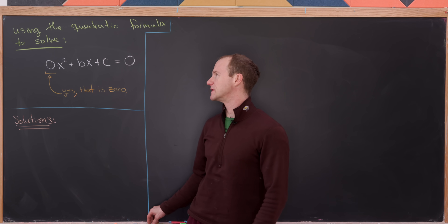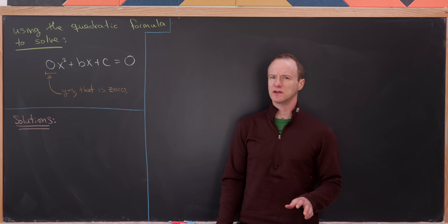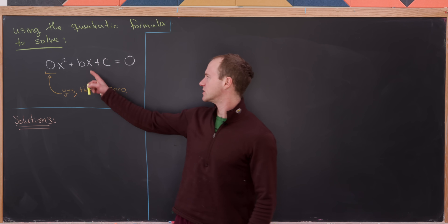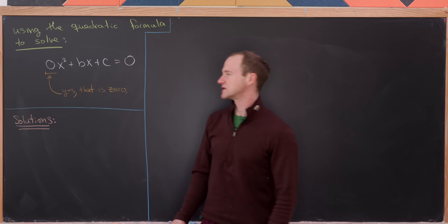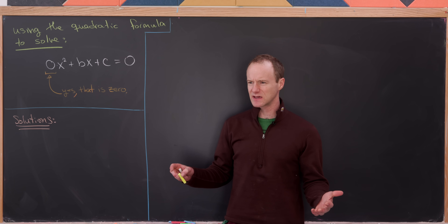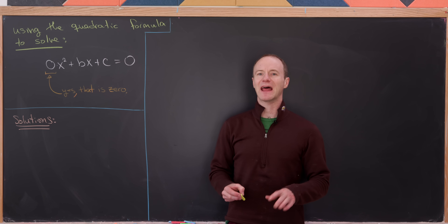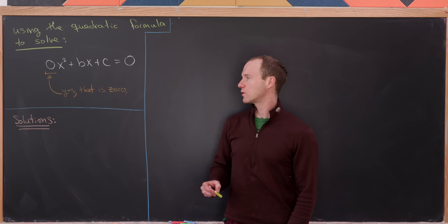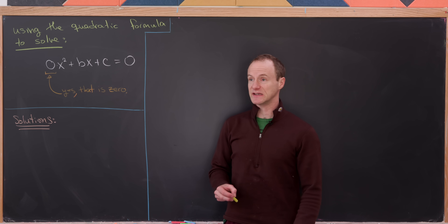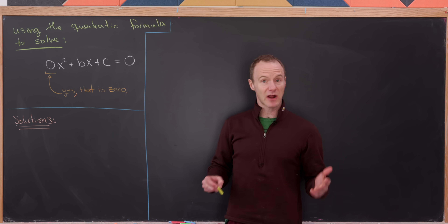Today I'd like to look at an interesting thing that happens when you use the quadratic formula to solve a linear equation. We can take any linear equation bx plus c equals 0 and add a 0x² to it, and now we have something that looks like a quadratic equation. What if we were to think of it as a quadratic equation and try to use the quadratic formula to solve it? The answer is kind of surprising and leads us to look at a nice area of math that perhaps you haven't seen before.